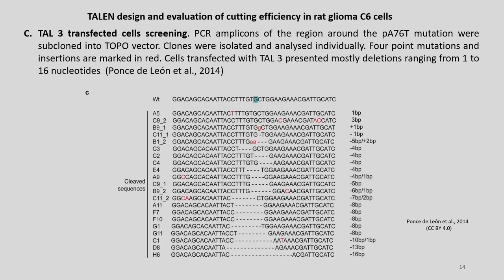TAL3-transfected cells were screened: PCR amplicons around the PA476T mutation were subcloned into a TOPO vector. Clones were isolated and analyzed individually — four point mutations and insertions are marked in red. Cells transfected with TAL3 presented mostly deletions ranging from 1 to 16 nucleotides, including minus 1, minus 4, minus 10, minus 13, and as large as minus 16 base pairs.